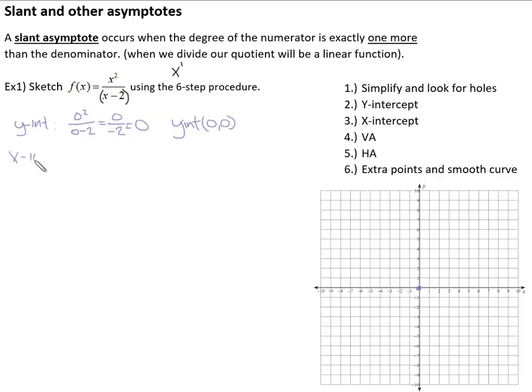Next, my x-intercept. To find the x-intercept, I want to know when the numerator equals 0. Does x squared equal 0? If we take the square root, we get x equals plus or minus 0, which makes sense because it's crossing my x and y-axis both at the origin. So my x-intercept is also (0,0).